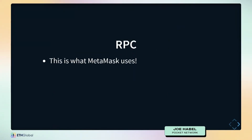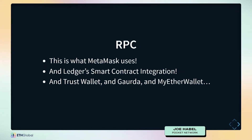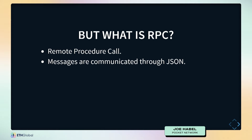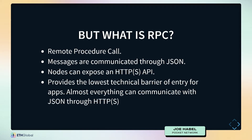And so in comes RPC service — this is what MetaMask uses, and Ledger smart contracts, Trust Wallet, Guarda Wallet, MyEther Wallet, and basically every web-based DApp you've ever used. RPC stands for Remote Procedure Call. Messages go between the network through JSON, nodes expose it over HTTP/HTTPS, and you can talk to it like any standard web application. It provides the lowest technical barrier of entry for people building apps on the blockchain — if you can write a web2 app that uses JSON HTTP, you can start building smart contract interfaces.